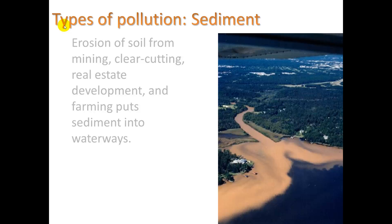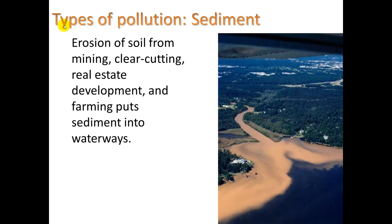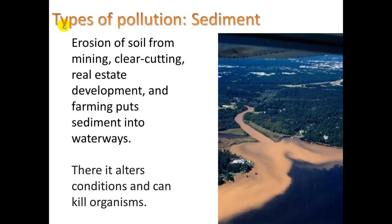Another type of pollution is sediment — erosion of soil from mining, clear cutting, real estate development, and farming. This puts floating particles of soil into waterways. Sediment can kill organisms by blocking light, and fish can be harmed by taking it in through their gills. It creates extremely dirty, dark water.